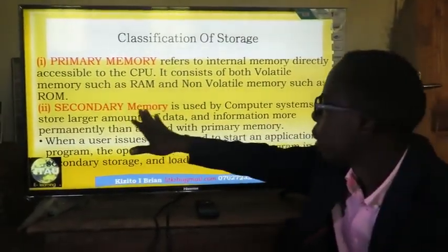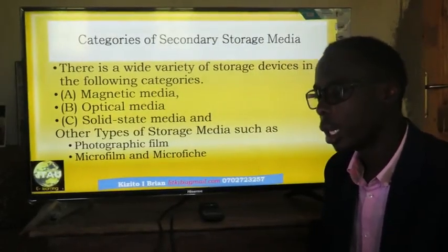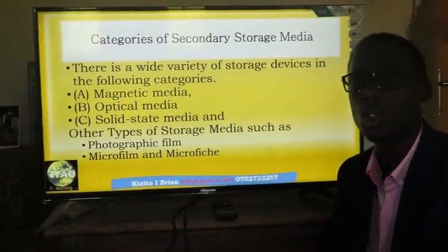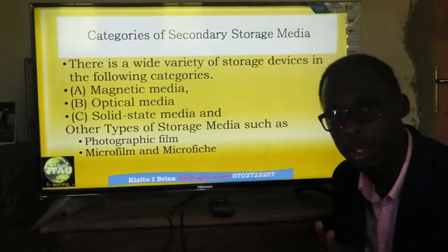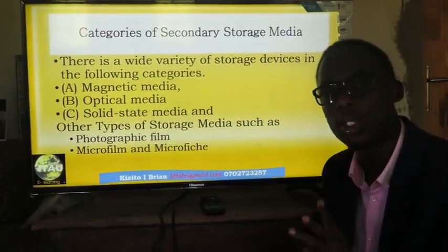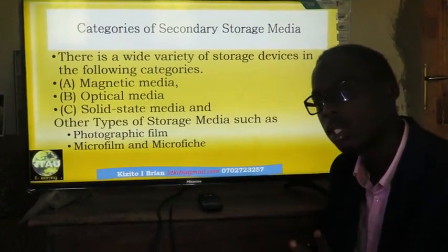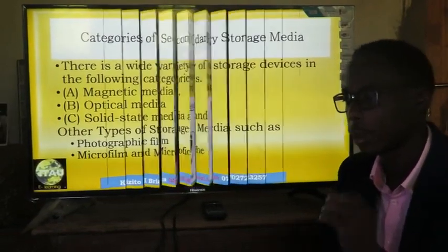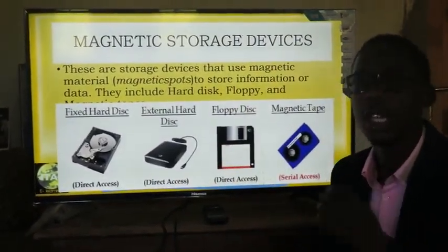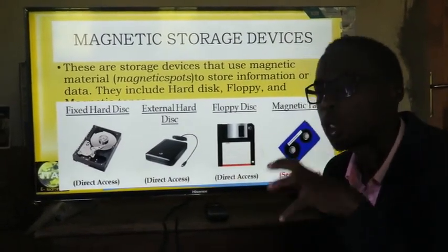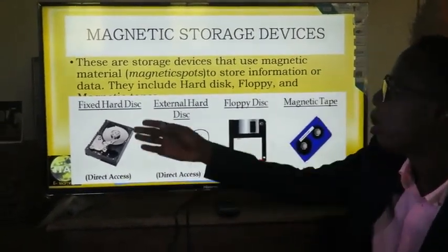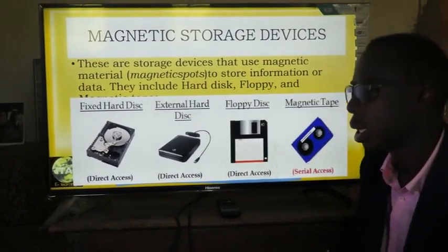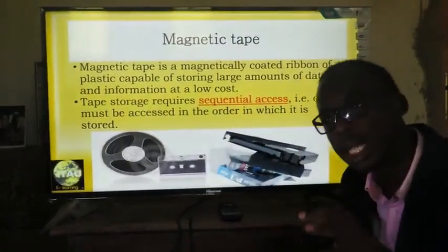Primary memory and secondary memory. Secondary storage is basically categorized into three main categories: solid state storage devices, magnetic storage devices, and optical storage devices. Magnetic storage devices use magnetic force to store data. Examples include the fixed hard disk or external hard disk, floppy disks, and magnetic key tapes — they have magnetic material on which data is written.